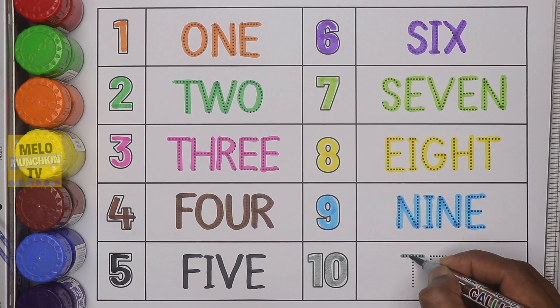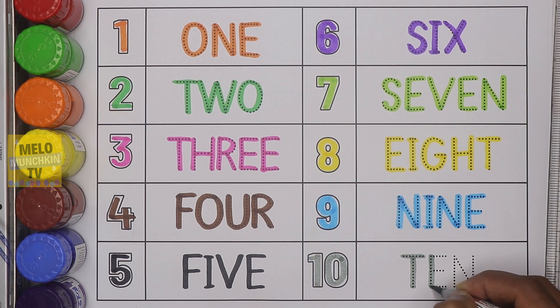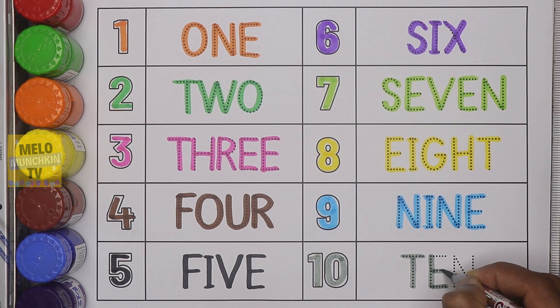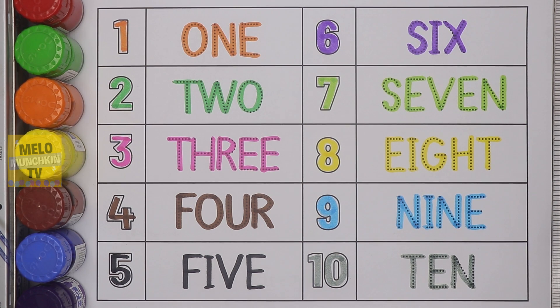And finally, I'll take gray color to write number ten — that is one zero — and the spelling is T-E-N, ten. So that's it for today, kids! I hope you have learned something from this video.